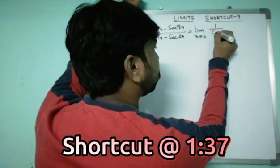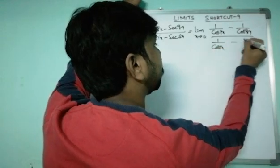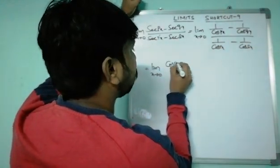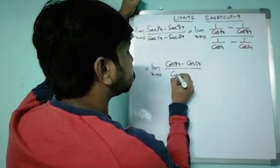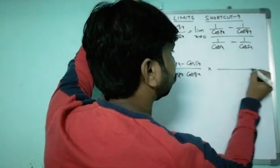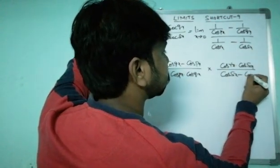Limit x tends to zero one by cos px minus one by cos qx whole by one by cos rx minus one by cos sx. This equals limit x tends to zero cos qx minus cos px if you take LCM you're getting by cos px into cos qx. If you take the denominator and take LCM you're getting cos rx into cos sx by cos sx minus cos rx.